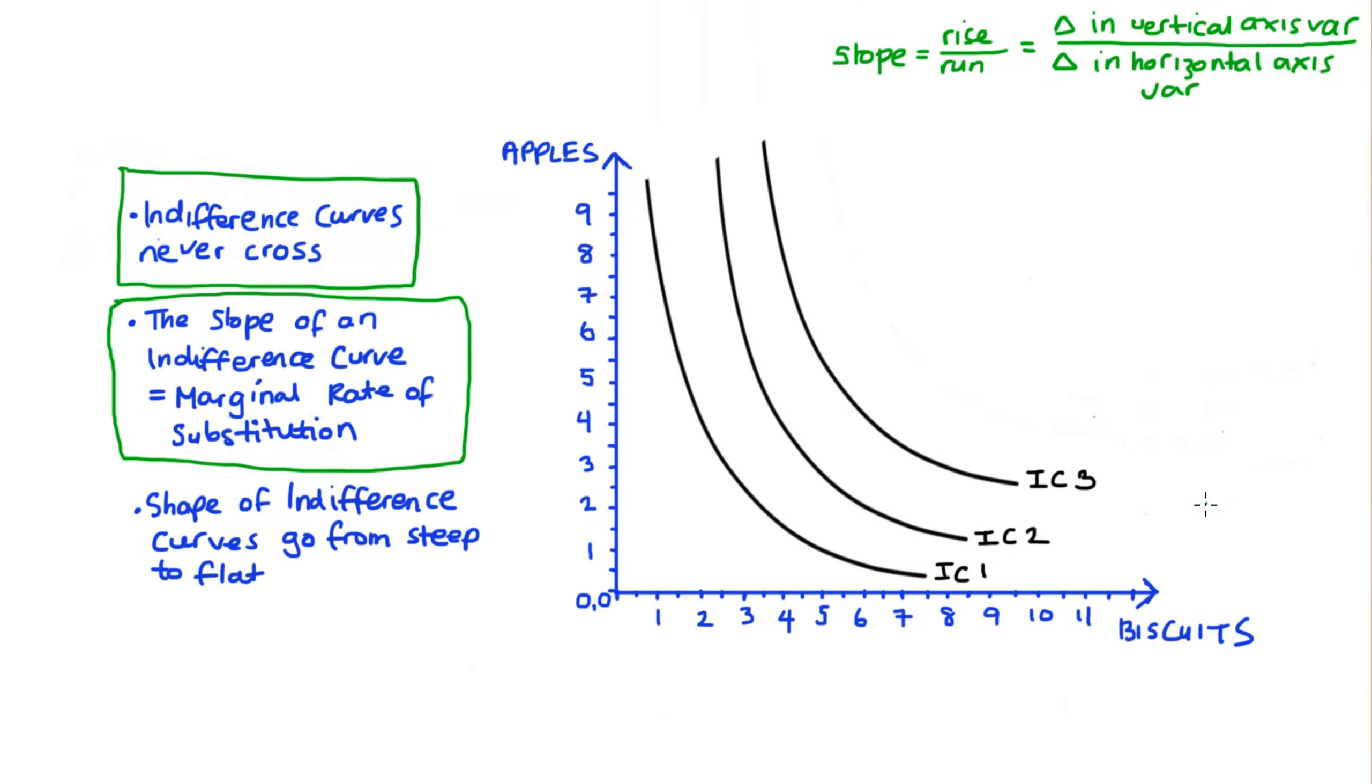Now remember that as we're moving along the indifference curve, the level of satisfaction or utility stays constant. And this means that we can interpret this slope, which is our marginal rate of substitution or MRS, as a measure of how much a consumer trades off between the two goods on our axes, whilst keeping their level of utility or satisfaction constant.